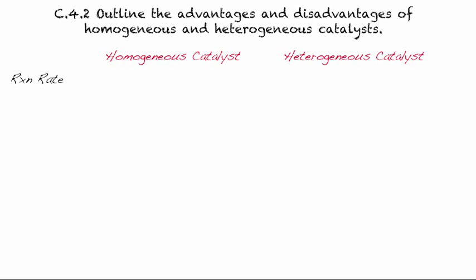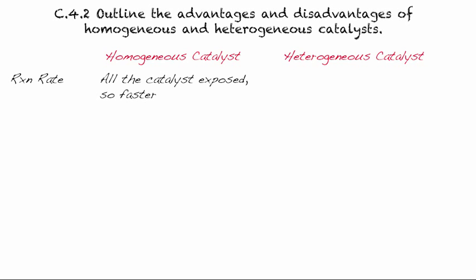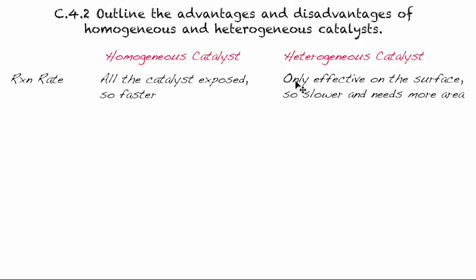Let's compare the reaction rates. If it's dissolved or aqueous, we have all of the different particles floating around, and they're able to hit each other from all different sides, so all of the catalyst is exposed. This allows for a somewhat faster reaction than what we would see in the heterogeneous catalyst, because the reactants have to adsorb to the surface, and if there's any metal catalyst below the surface, it actually cannot interact with the reactants. So it's going to be a little bit slower, and if you want to compensate, you need to have more area for the active sites to do the reaction.